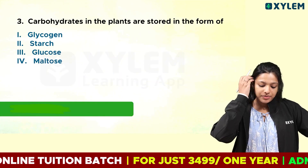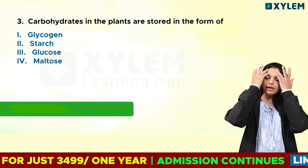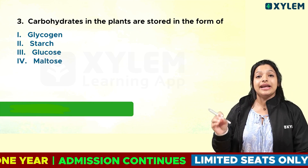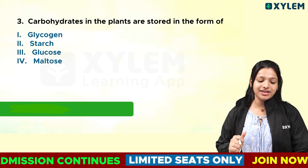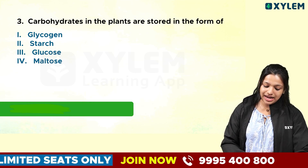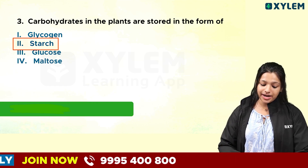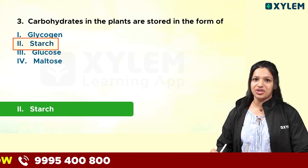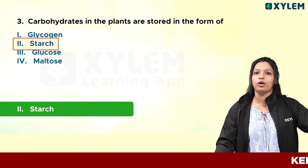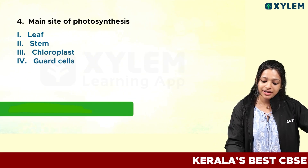Third question: carbohydrates in the plants are stored in what form? Starch is stored in the form of starch — that is a very important point. Carbohydrates in plants are stored in the form of starch.